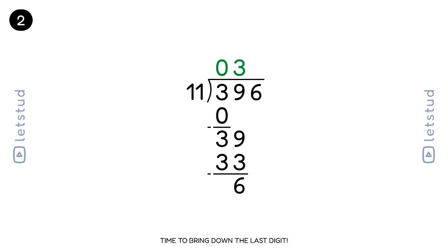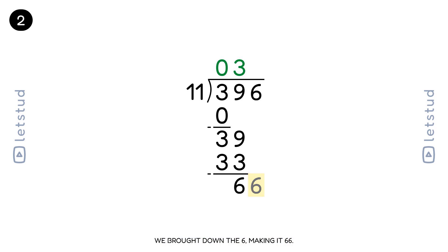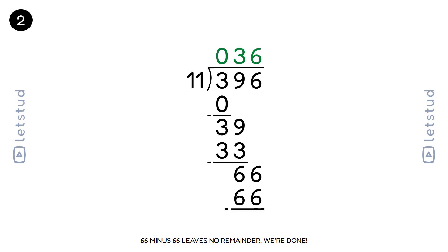Time to bring down the last digit. We have 66. How many times does 11 fit into 66? It fits 6 times. We brought down the 6, making it 66. 11 fits into 66 exactly 6 times. 6 times 11 is 66. 66 minus 66 leaves no remainder.